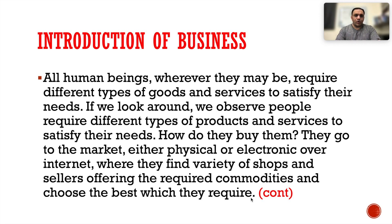All human beings, wherever they may be, require different types of goods and services to satisfy their needs. People require different types of products and services to satisfy their needs. They go to the market either physically or electronically over the internet, where they find a variety of shops and sellers offering the required commodities and choose the best. Every human being requires some commodities, which can be in the form of a service or a physical product.